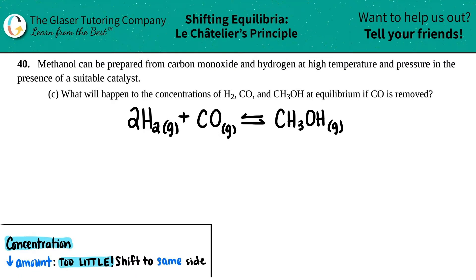Number 40. Methanol can be prepared from carbon monoxide and hydrogen at high temperature and pressure in the presence of a suitable catalyst. Then we have letter C. What will happen to the concentrations of H2, CO, and CH3OH at equilibrium if CO is removed?